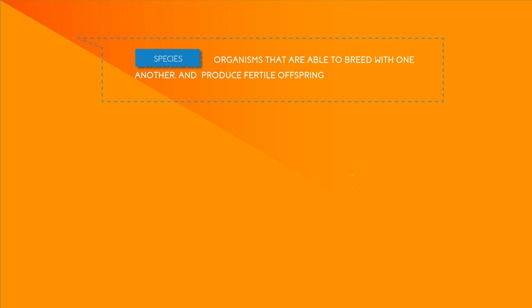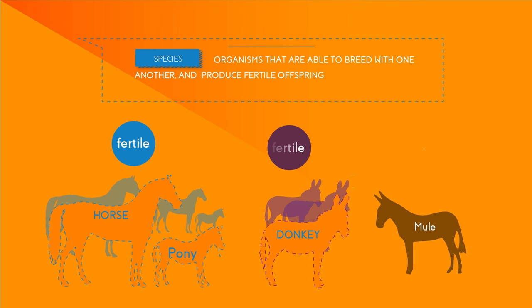A species is defined as all organisms that are able to breed with one another and most importantly are able to produce fertile offspring. Horses are an example of such a group. All breeds of horse, including ponies, can mate and produce fertile offspring.